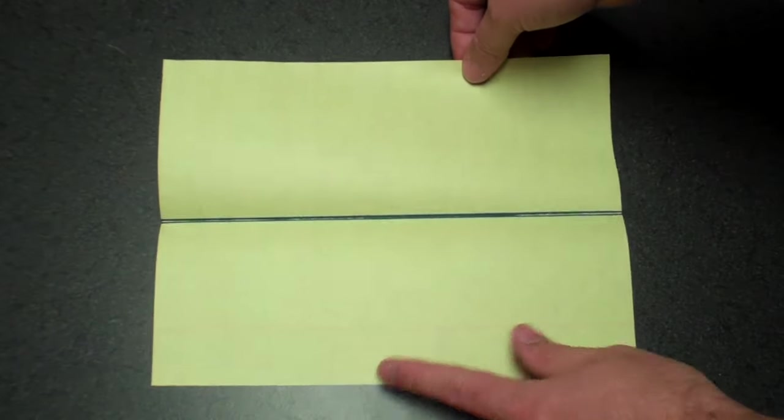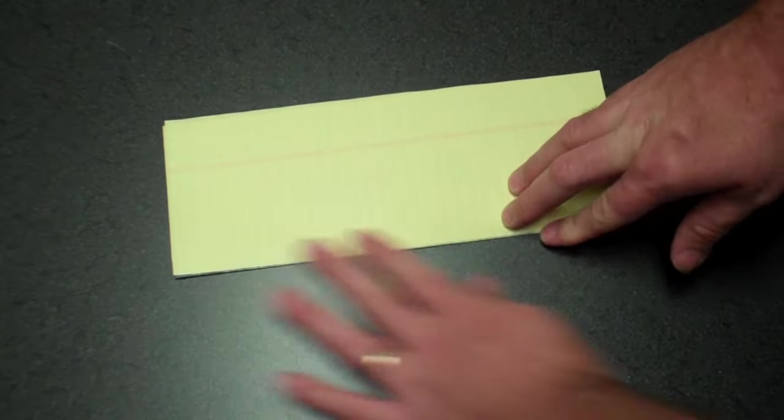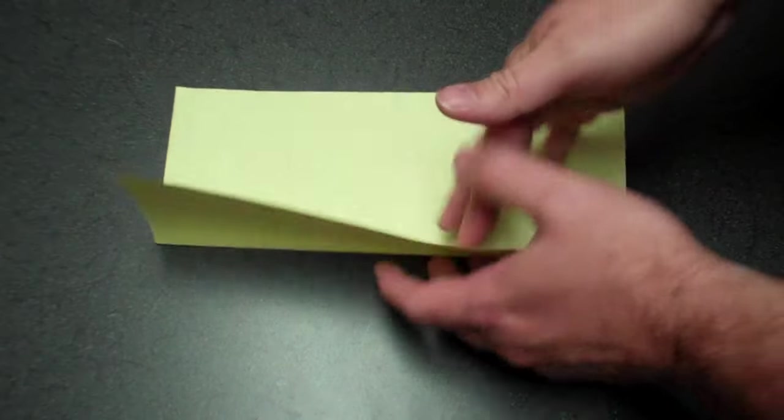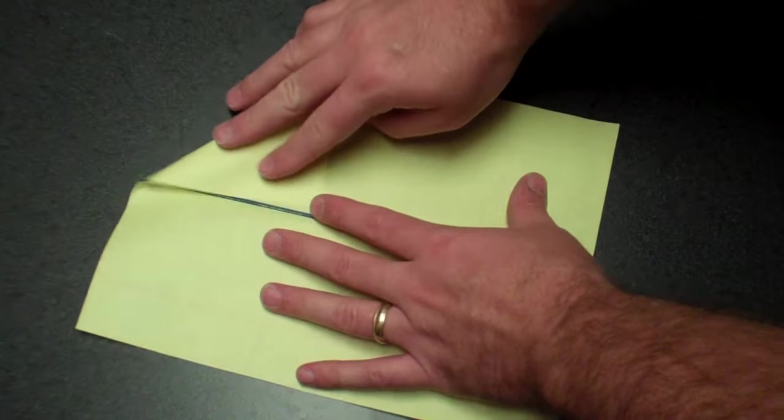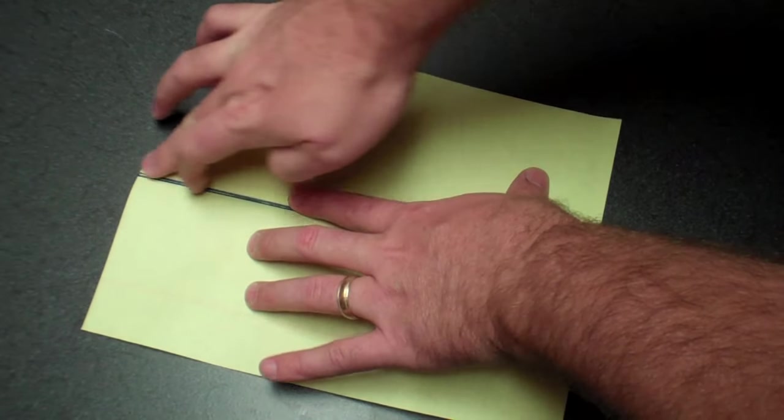You start with a book fold. You take the paper and fold it simple half sheet book fold, and you open it up. You're going to want to do interior triangle folds along that middle line.